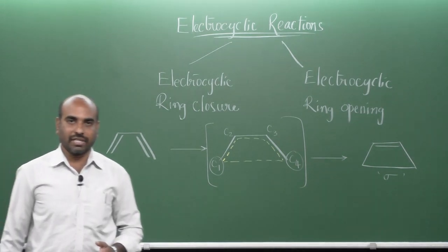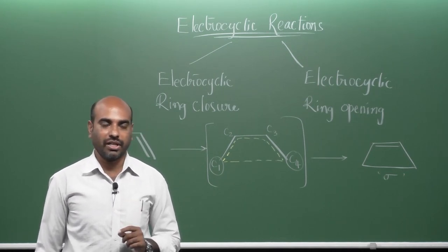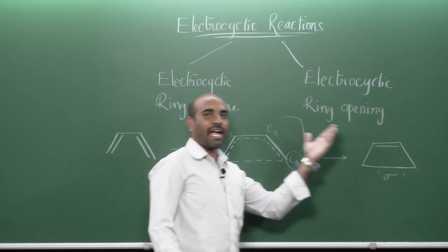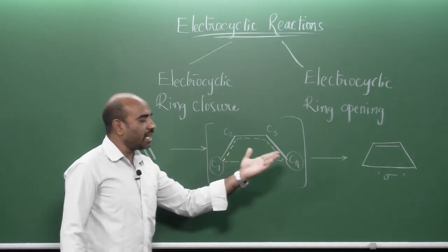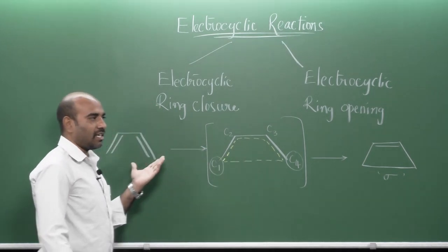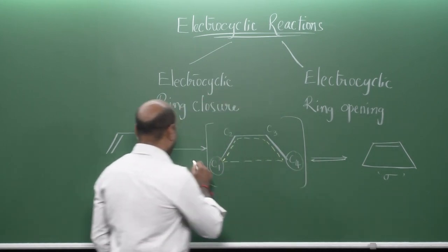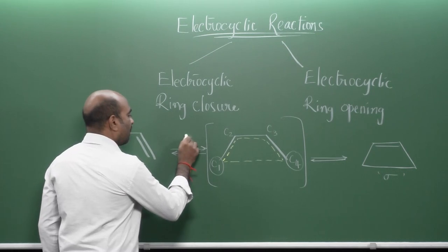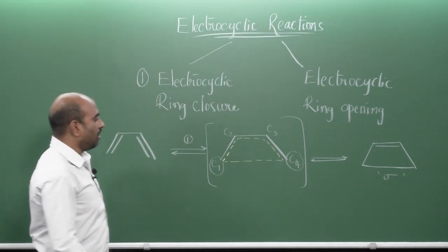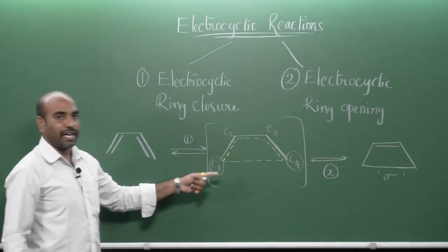As already discussed, most pericyclic reactions are reversible in nature. Therefore, the product has every chance to get back to the reactant molecule, because of the cyclic reorganization of the electrons — it will give you the cyclic transition state and you will get the reactant molecule. The forward reaction is the electrocyclic ring closure reaction, whereas the backward reaction is the electrocyclic ring opening reaction.